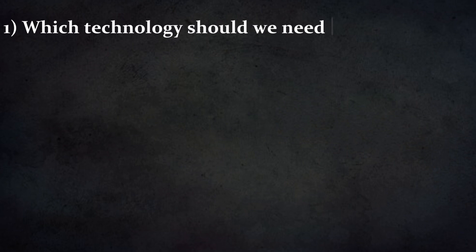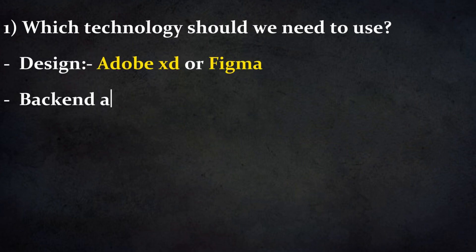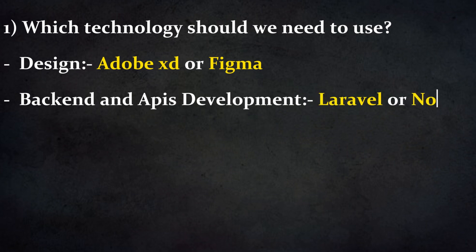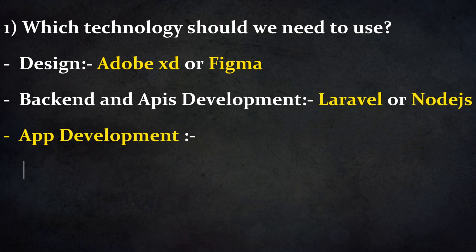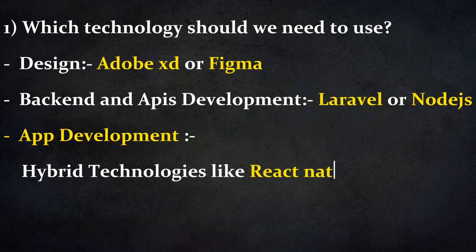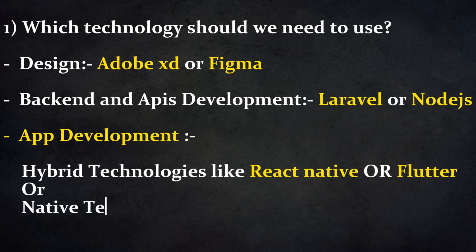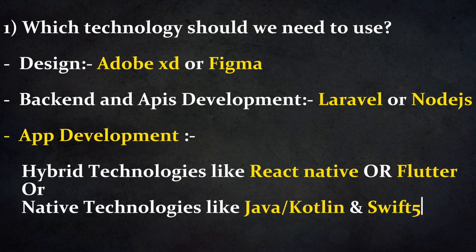Which technology should we use? For design: Adobe XD or Figma. For backend and API development: Laravel or Node.js. For app development: hybrid technologies like React Native or Flutter, or native technologies like Java, Kotlin, and Swift.